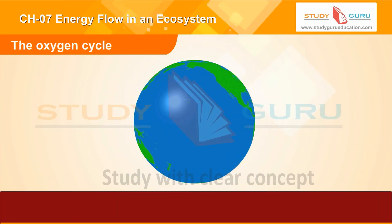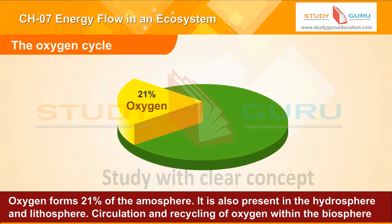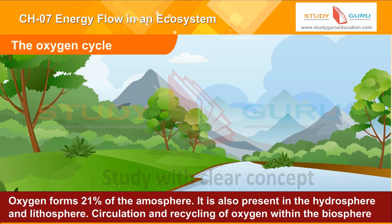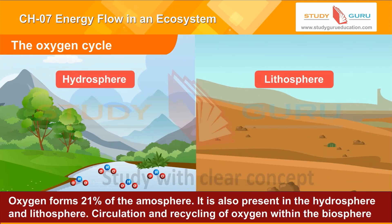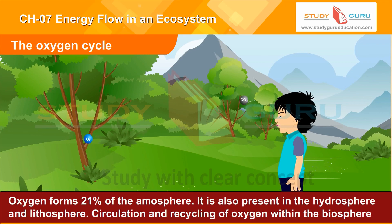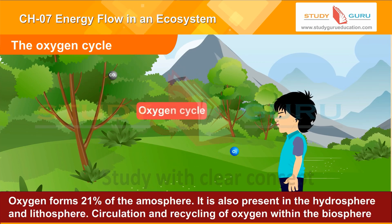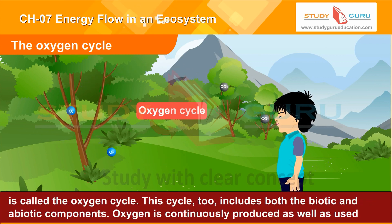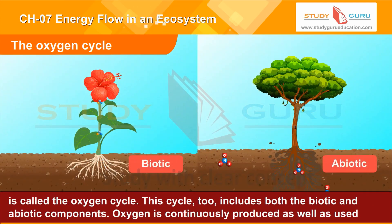The oxygen cycle. Oxygen forms 21% of the atmosphere and is also present in the hydrosphere and lithosphere. The circulation and recycling of oxygen within the biosphere is called the oxygen cycle. This cycle includes both biotic and abiotic components.